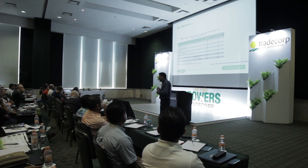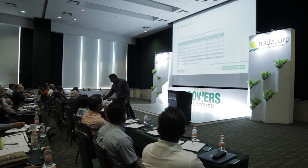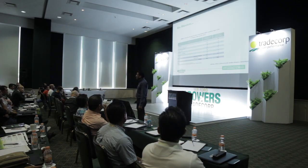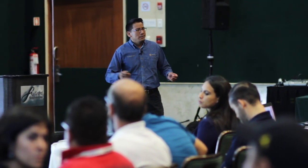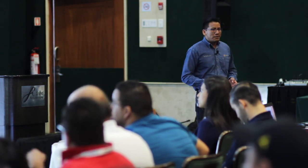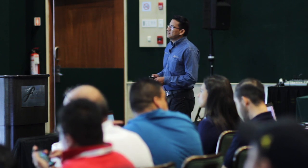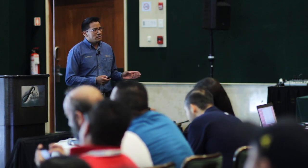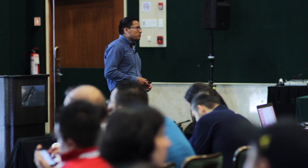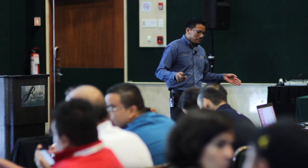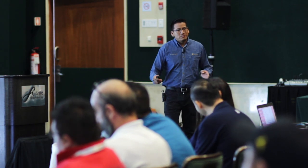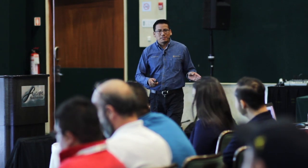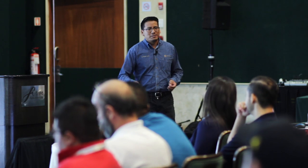¿Y esto por qué? Porque hay una alta demanda y alto uso de fertilizantes nitrogenados, entre ellos urea y nitratos. Pero hablando en términos de eficiencia de uso del nitrógeno, presenta la menor eficiencia, de 20 a 30%. O sea, del total de kilogramos de nitrógeno que aplico al suelo, si aplico 100, solo 20 o 30% van a ser absorbibles por la planta.